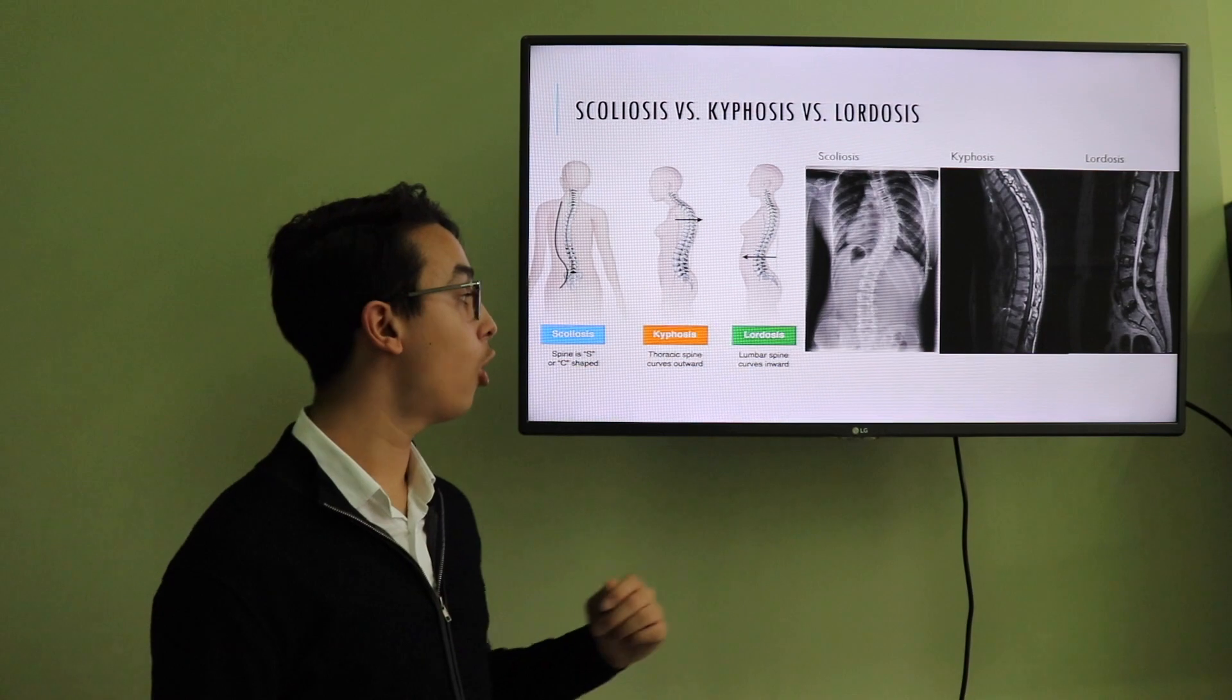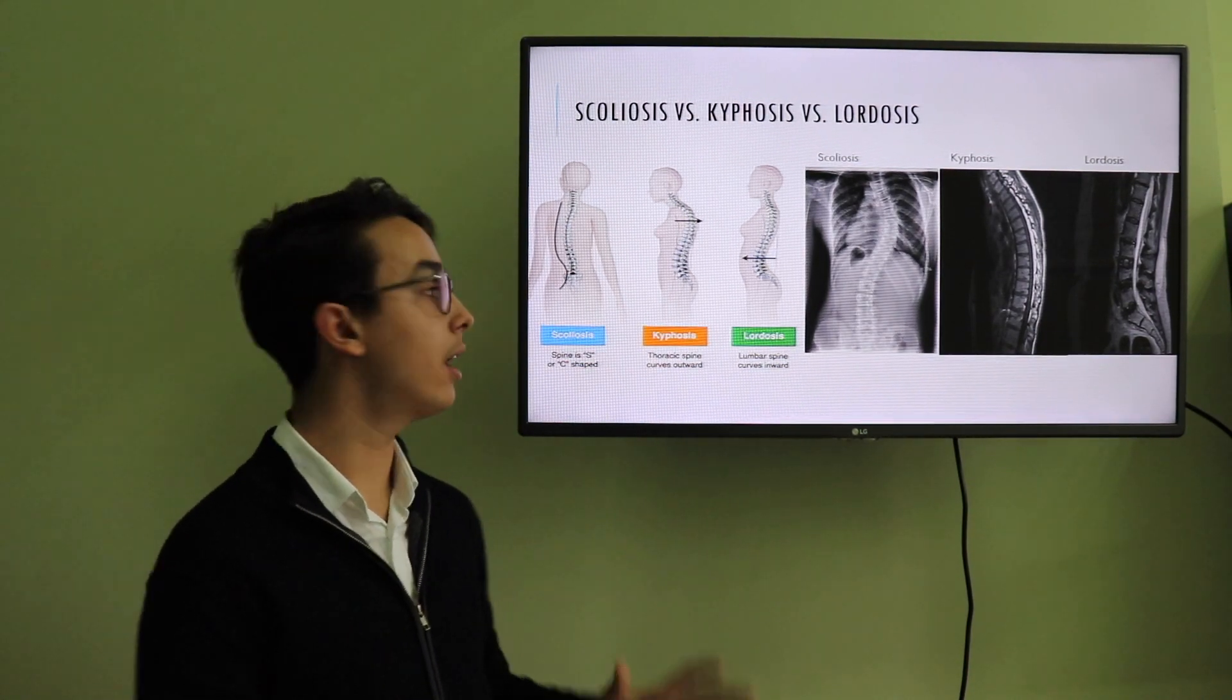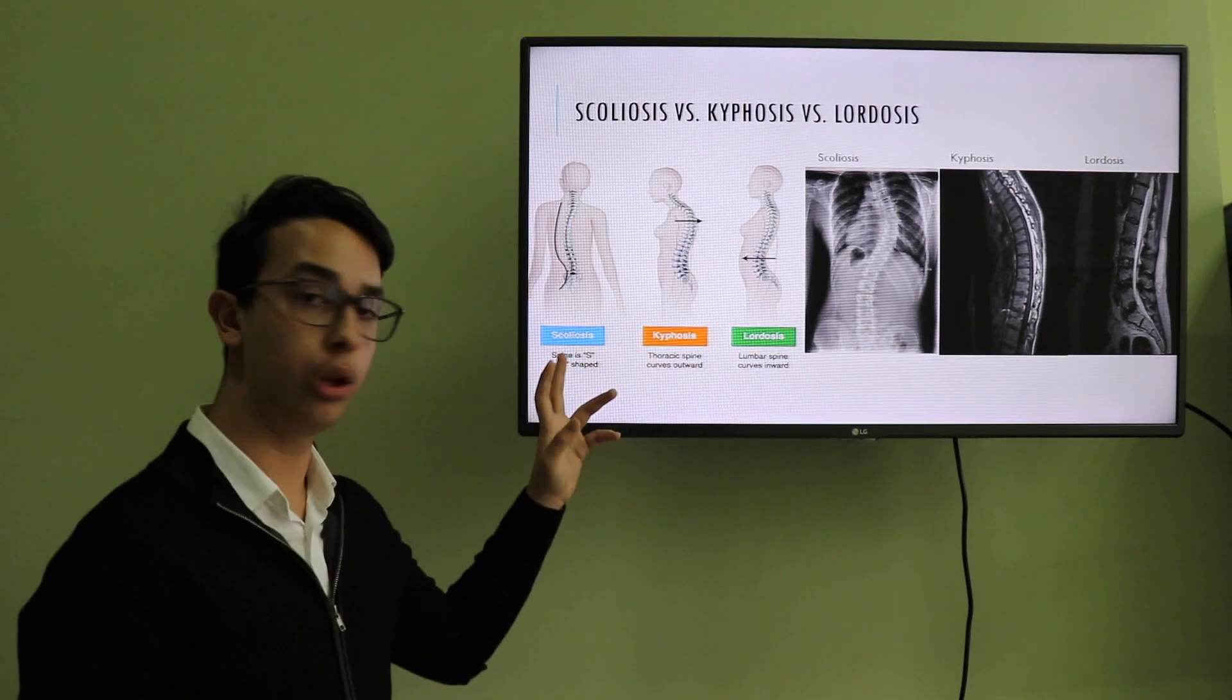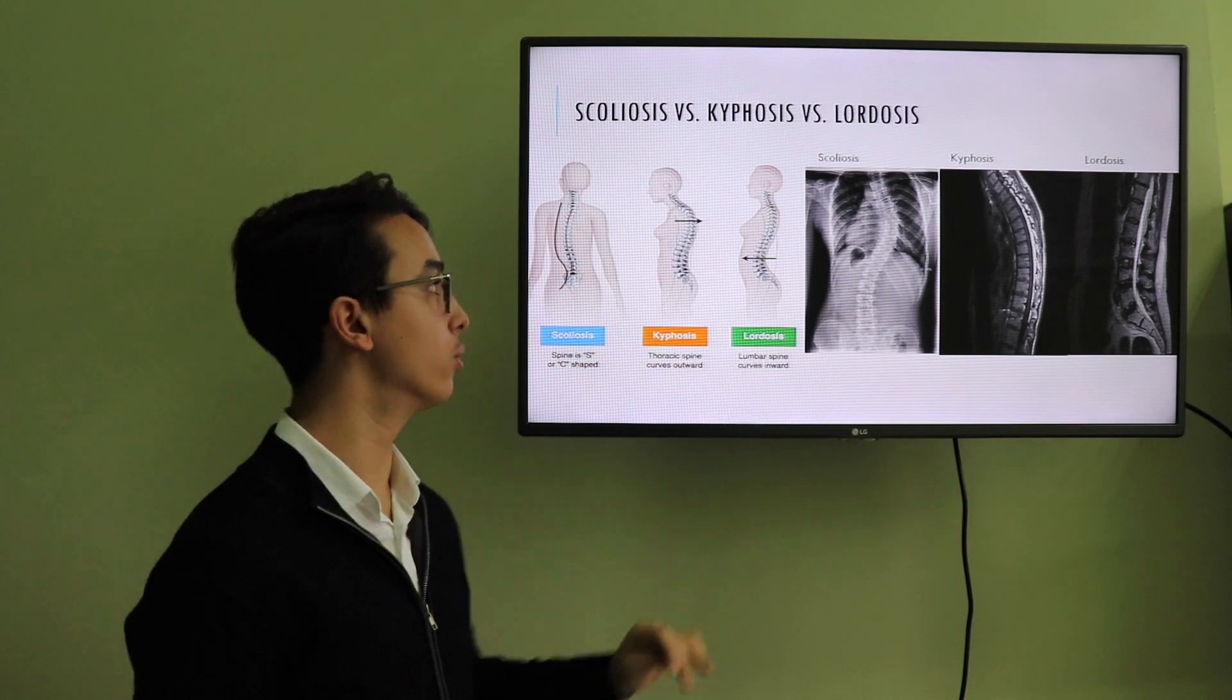Based on the findings that we get from the Cobb's angle, the patient may have these types of diseases: scoliosis, kyphosis, and lordosis.